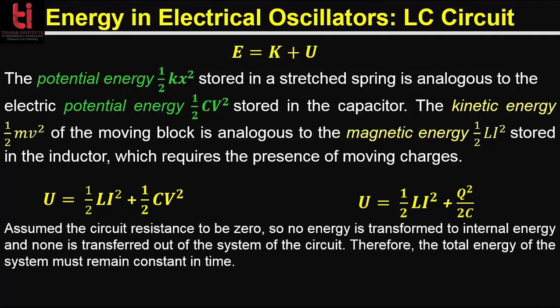Assuming that the resistance is zero, no energy is transformed to internal energy and none is transferred out of the system, therefore the total energy of the system must remain constant in time. So the first derivative of the total energy with respect to time equals zero: d/dt(½LI² + Q²/2C) = 0. We can rewrite this as (Q/C)·(dQ/dt) + L·I·(dI/dt) = 0.